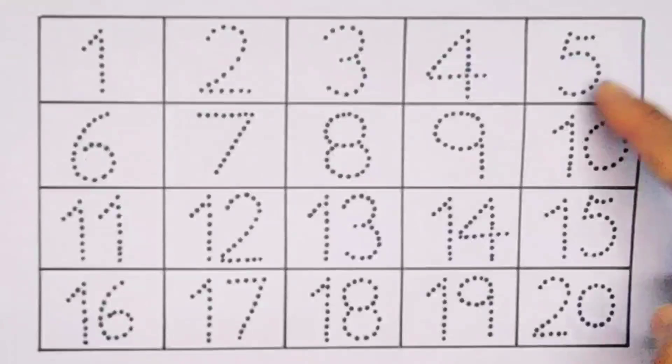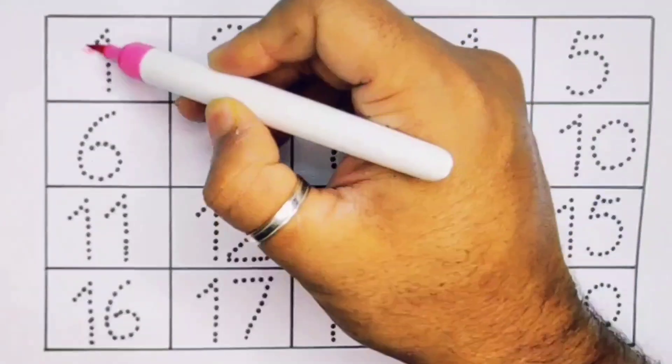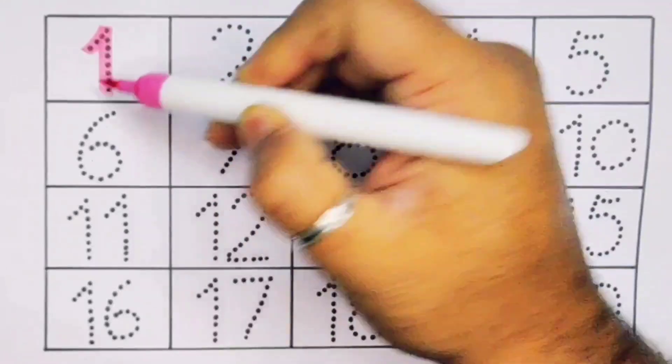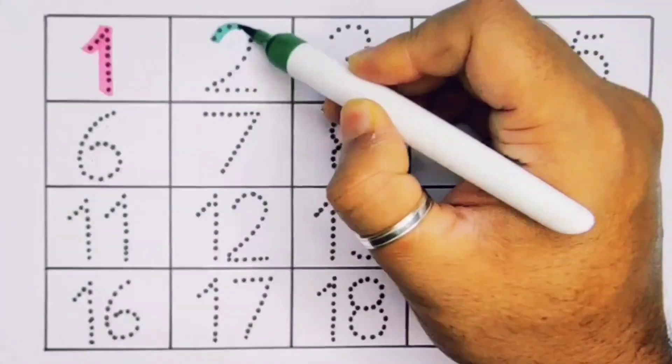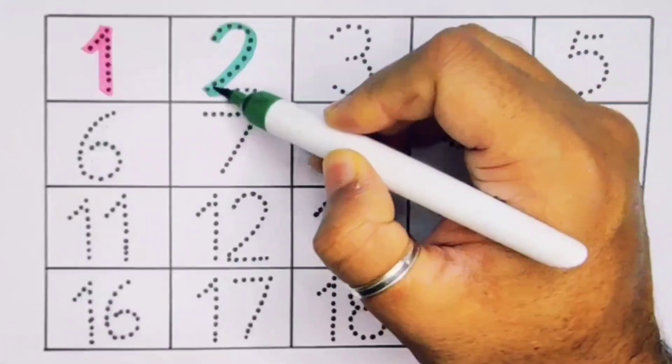Now let's learn the numbers counting 1 to 20. First 1, number 1, next is 2, number 2.